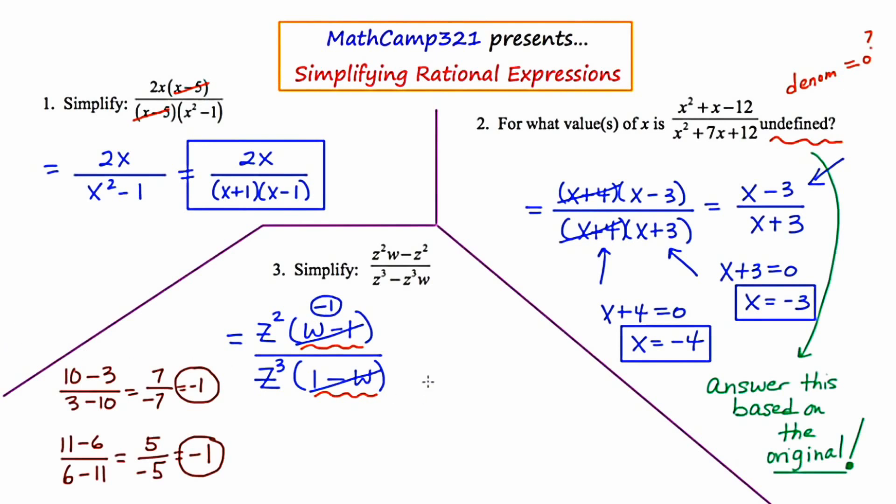So at this moment in time, I'm left with negative z squared over z cubed. And the two z's on the top are going to cancel with two z's from the bottom. And I'm left with just negative 1 over z.